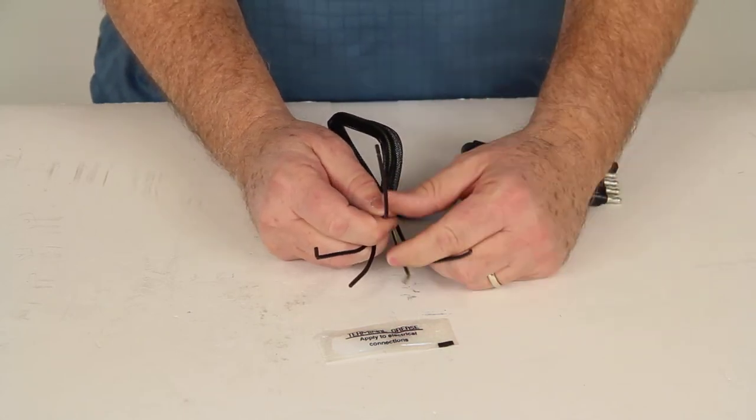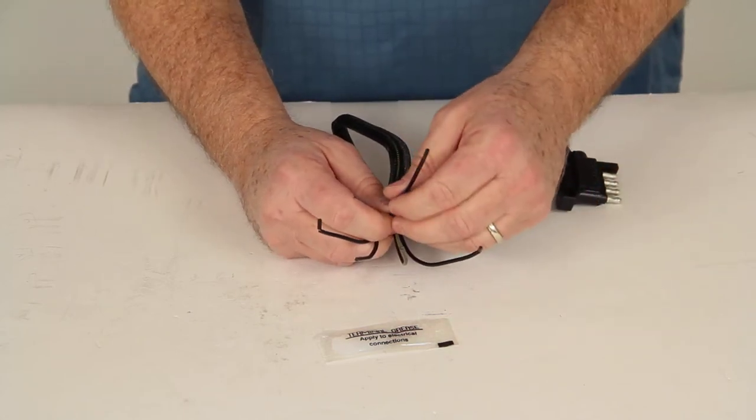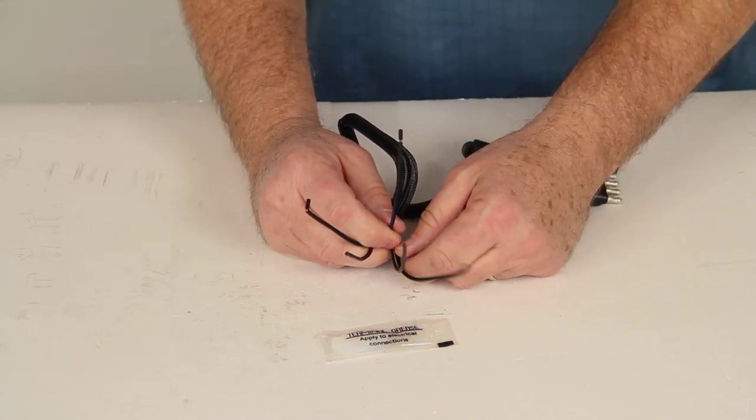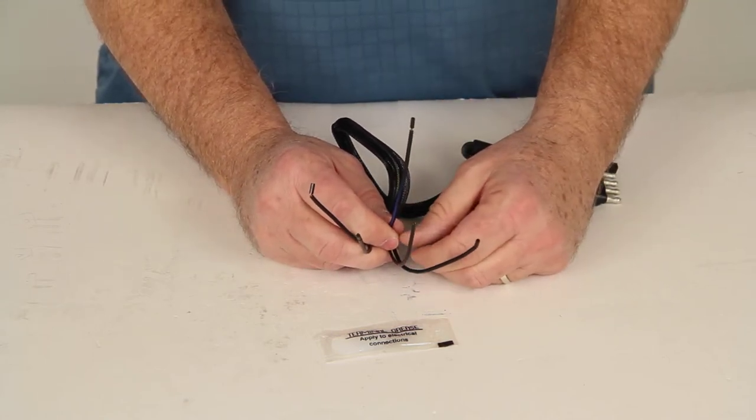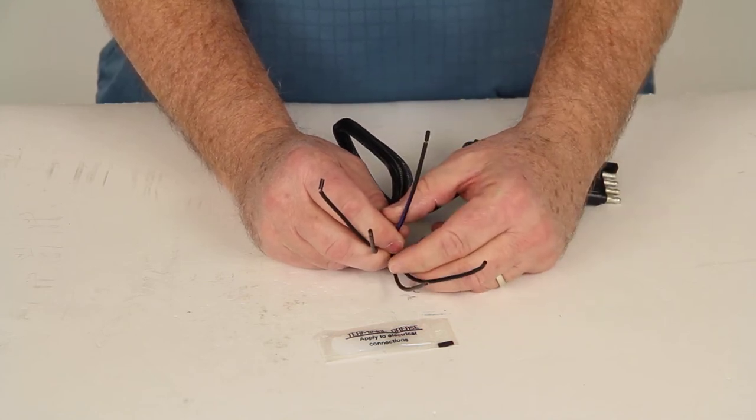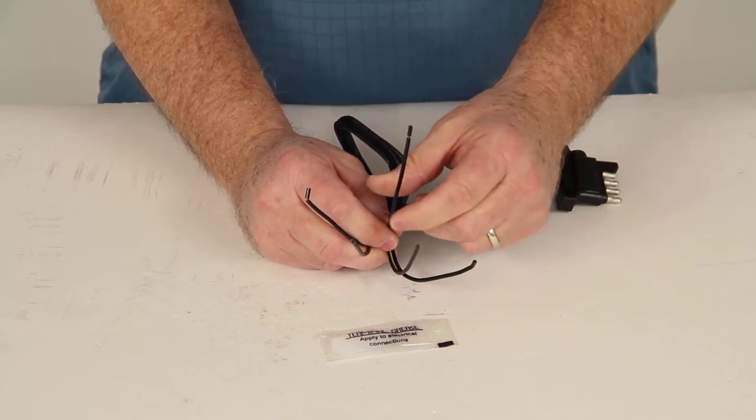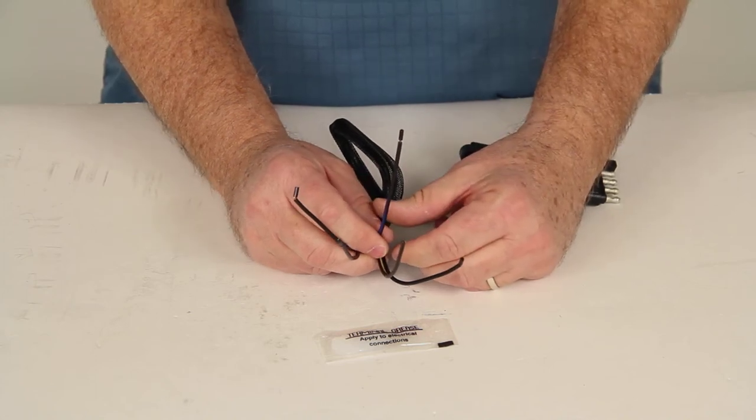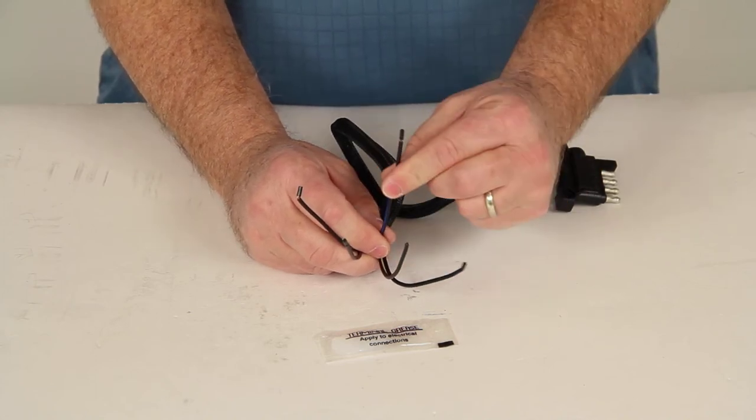This fifth wire, the blue one that says brake on it, basically, in this model, it'll tie into your reverse lights on your vehicle so that a signal can be sent to the hydraulic brake actuator to disengage whenever the tow vehicle is put into reverse. To use this function, your actuator must have an electric reverse lockout with the solenoid that this wire connects to.